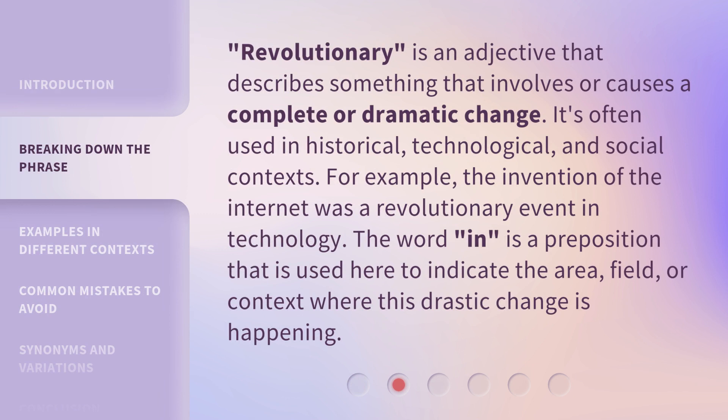'Revolutionary' is an adjective that describes something that involves or causes a complete or dramatic change. It's often used in historical, technological, and social contexts. For example, the invention of the internet was a revolutionary event in technology. The word 'in' is a preposition used here to indicate the area, field, or context where this drastic change is happening.